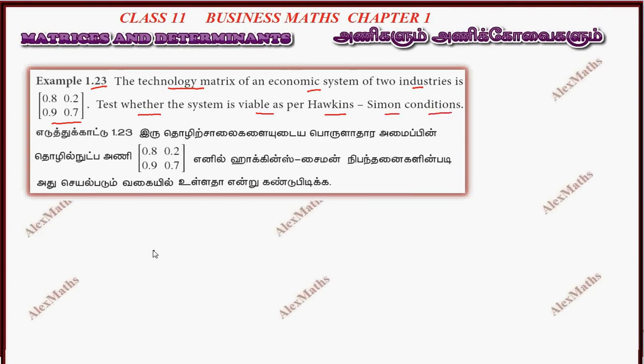Now, the technology matrix is B. So we will copy this: B equal to 0.8, 0.2, 0.9, 0.7. Now we will check the Hawkins-Simon conditions.